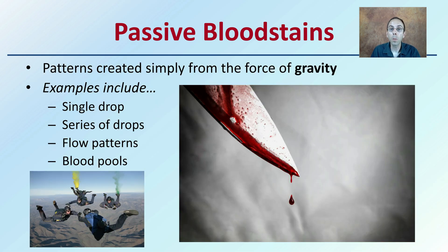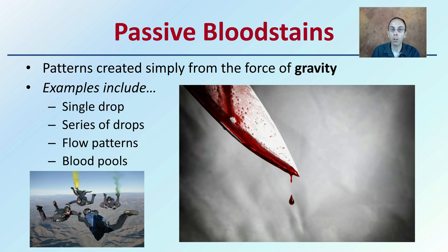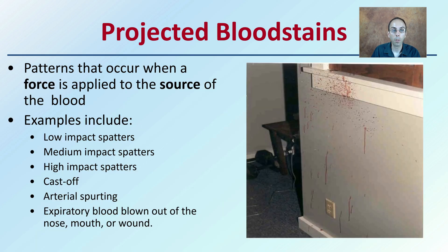First off, passive blood stains are patterns created simply from the force of gravity. They can be a single drop, a series of drops, a flow pattern, or blood pools. All these are passive because they're relying mainly on the forces of gravity to carry and move them.